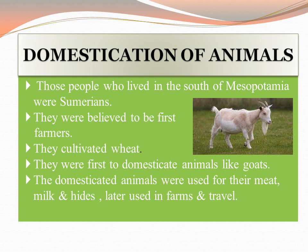Here, children, you can see the domestication of animals. The Sumerians — the people who lived in the south of Mesopotamia — were very much into domestication of animals, that is, taming animals for their needs. They were believed to be the first farmers. They were the first people to cultivate wheat and to domesticate animals like goats. With domesticated animals, they could get meat, milk, and hide — the hide being the skin of the animal which is treated and made into hide so that various kinds of things could be made from it. Later, these animals were also used for farming and for traveling from one place to another.